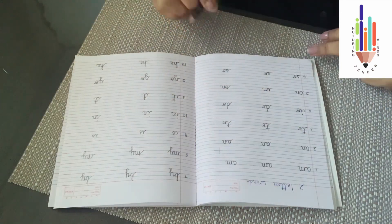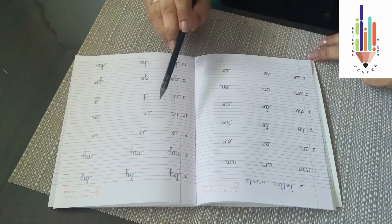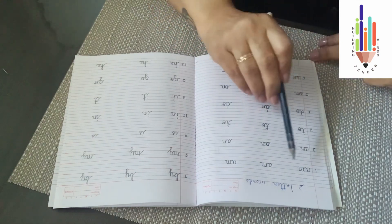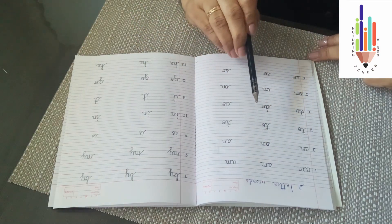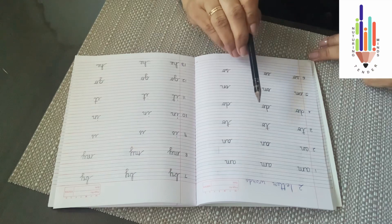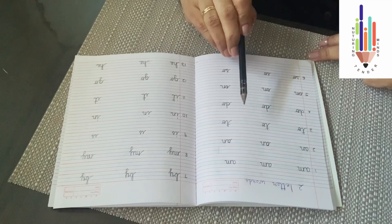So children, this is how you write your cursive two-letter words. You have to write each word three times and as you are writing you have to say and write, so that you remember quickly and it helps you to learn. I am sure this video has helped you.